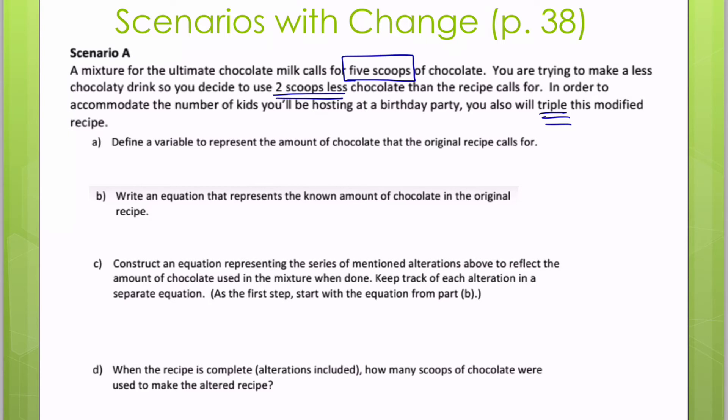So the first thing it asks us to do is to define a variable to represent the amount of chocolate the original recipe calls for. We already know what that is because they told us it was five scoops of chocolate. So I'm going to use C for chocolate just because that makes sense. You could use any variable that really doesn't matter. Part B says write an equation that represents the known amount of chocolate in the original recipe. So right now I know that C equals five and that's five scoops of chocolate.